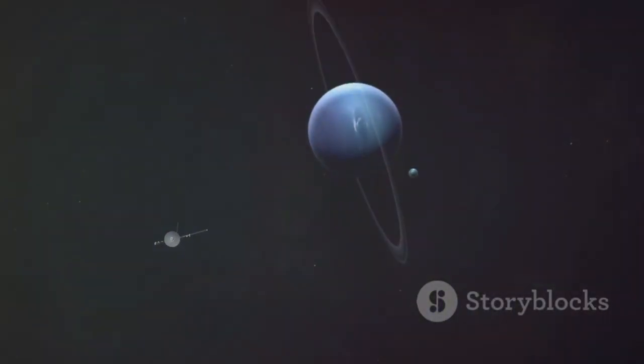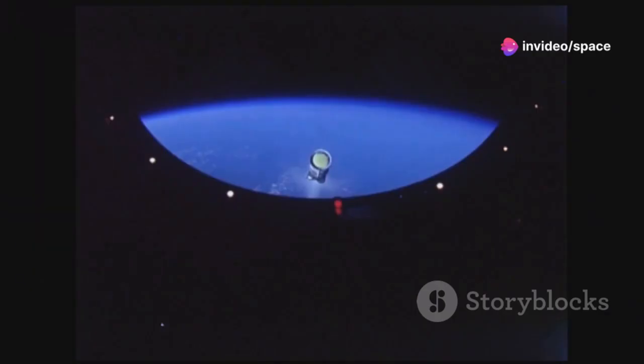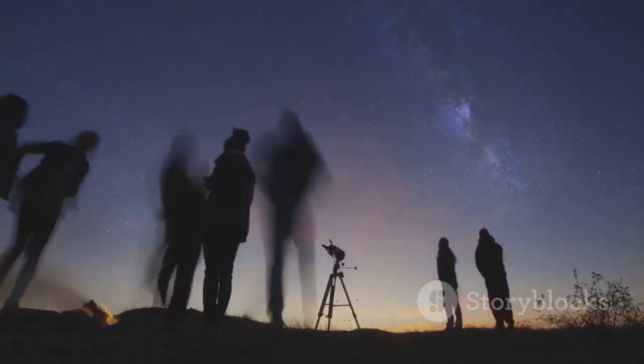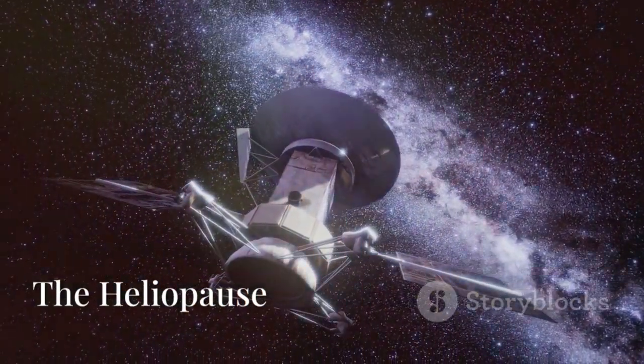Voyager 2 continued to Uranus and Neptune, discovering tipped axes, dark rings, and Triton's nitrogen geysers. Each flyby rewrote textbooks, turning distant dots into dynamic worlds. The voyagers didn't just visit planets, they revolutionized planetary science.